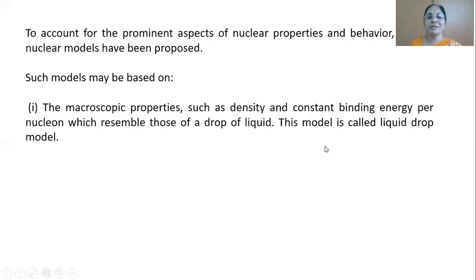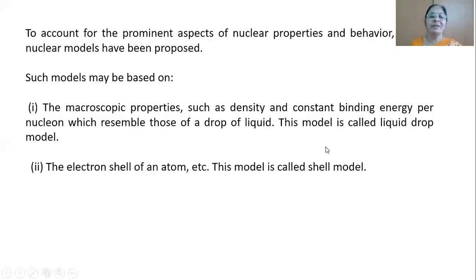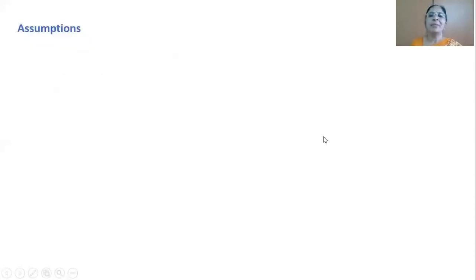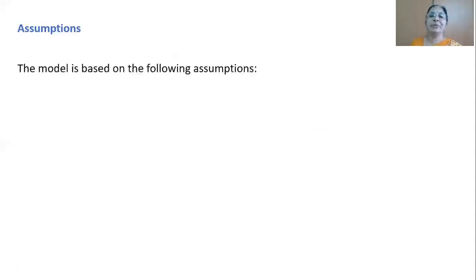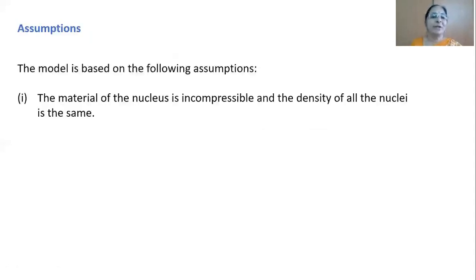Such models may be based on macroscopic properties such as density and constant binding energy per nucleon, which resemble those of a drop of liquid — so this model is called the liquid drop model. The second model, based on the electron shell of an atom, is called the shell model. The basic assumptions upon which the liquid drop model is proposed are given below.